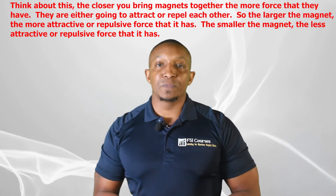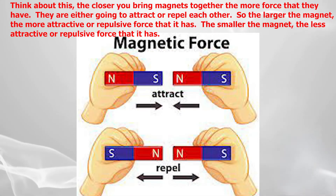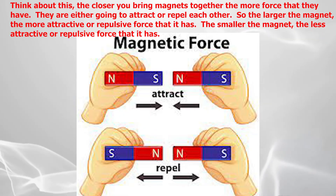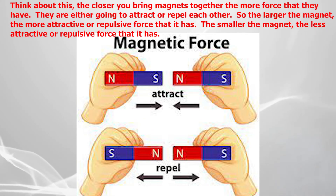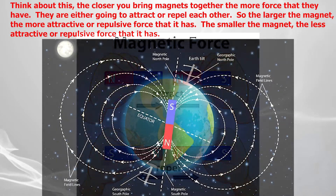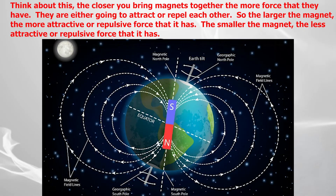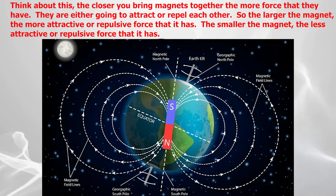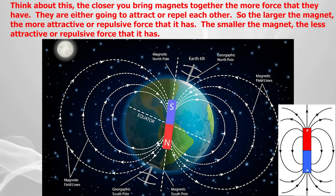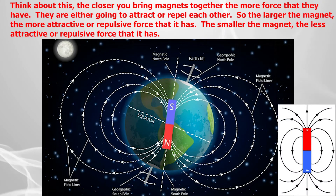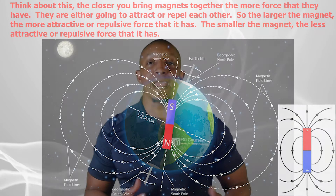Think about this: the closer you bring magnets together, the more force they have — they're either going to attract or repel each other. The larger the magnet, the more attractive or repulsive force it has. The smaller the magnet, the less attractive or repulsive force it has.